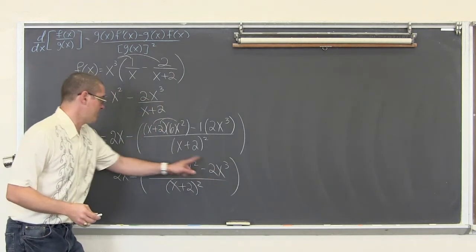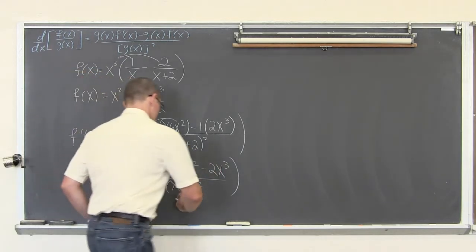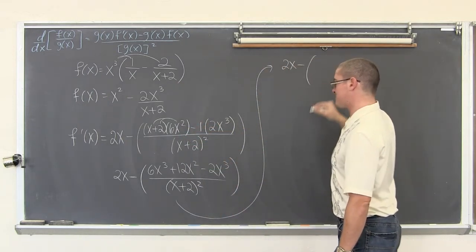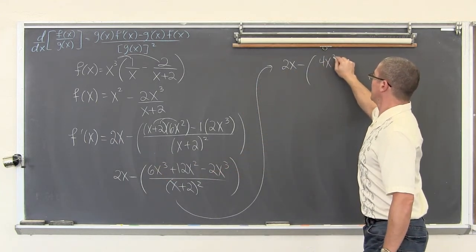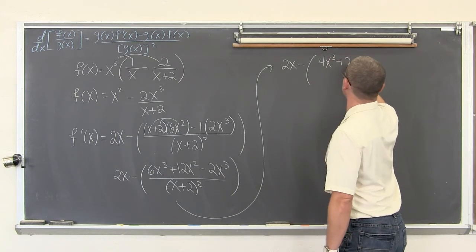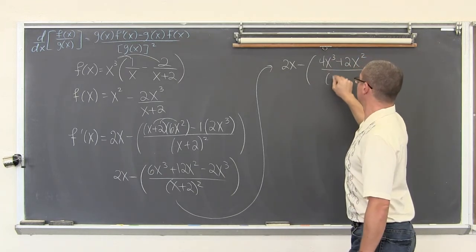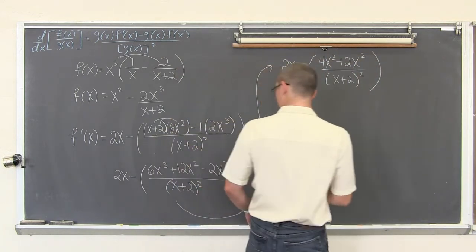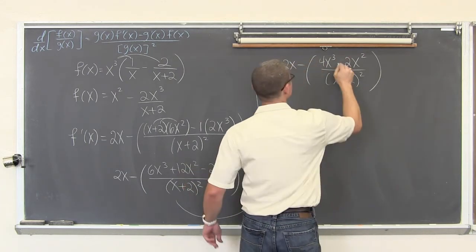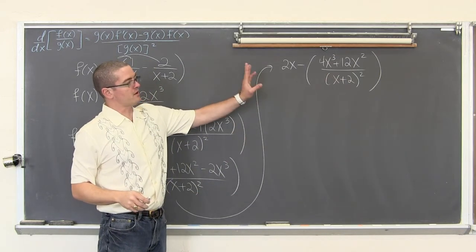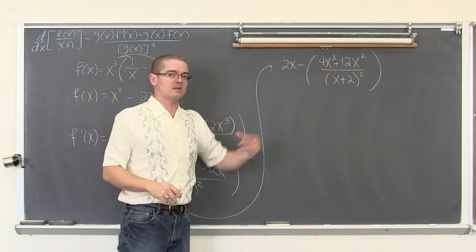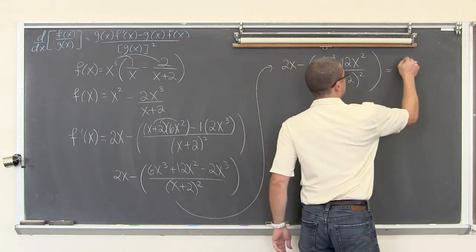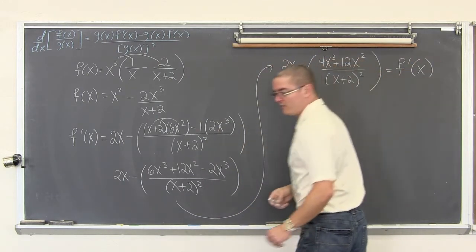Cleaning up: we have 2x minus, then 6x squared times x is 6x to the third, and 6 times 2 is positive 12x squared, minus 2x to the third, all over x plus 2 squared. We have like terms with degree 3. So we get 2x minus 4x cubed plus 12x squared, all over x plus 2 squared. We could factor out 4x squared from the numerator, but it will not cancel with the denominator. That is the derivative of f of x.